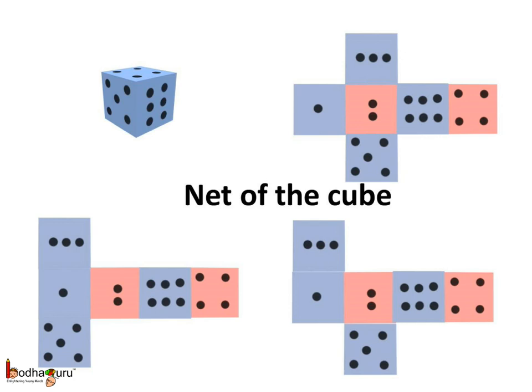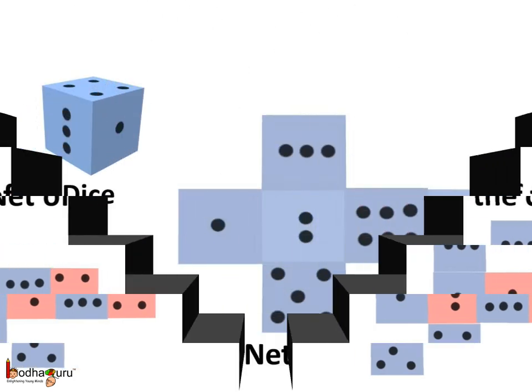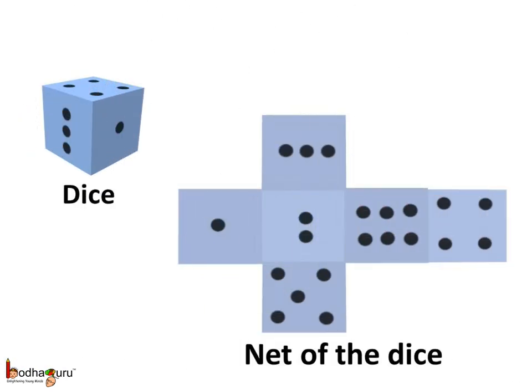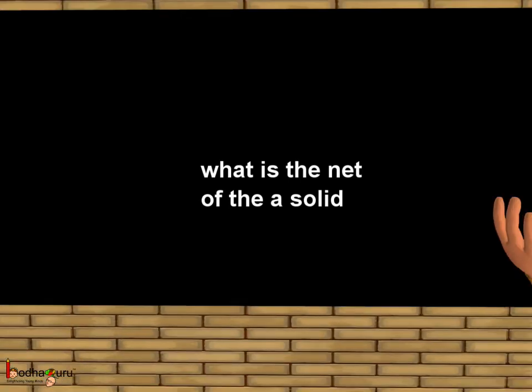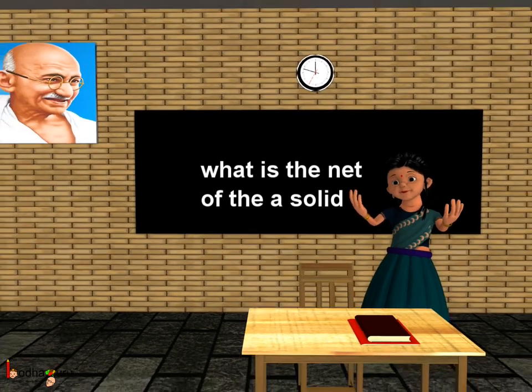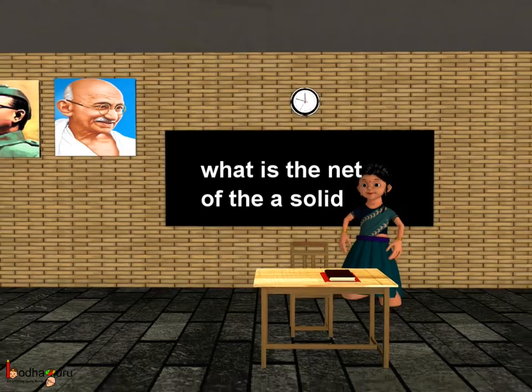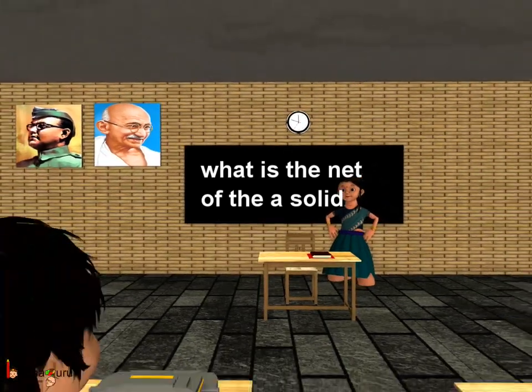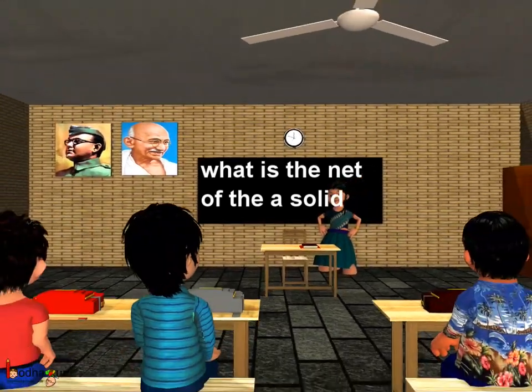A cube has many more nets. Now you know what the net of a solid is — it is the drawing of the unfolded solid shape. That's all for now. Bye-bye children.